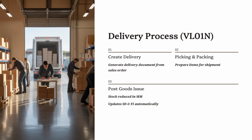Step 3: Delivery Process (VL01N). Once the sales order is created, the next step is the delivery process, handled in SAP through transaction VL01N. This is where the logistics side of SAP SD begins. First, create the delivery document in VL01N by referencing the sales order — the system copies all relevant details like materials, quantities, and plant. Second, picking and packing: warehouse staff select the products and prepare them for shipment; picking list and packing slip can be printed directly from SAP. Third, Post Goods Issue (PGI): when PGI is posted, stock levels are reduced in MM and financial entries are created automatically in FI.